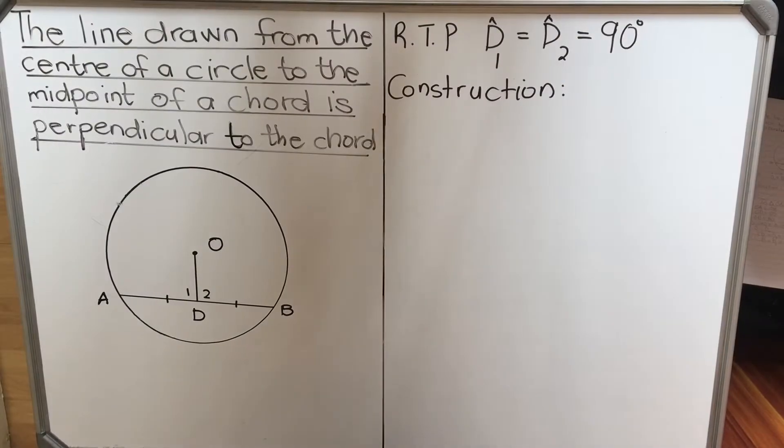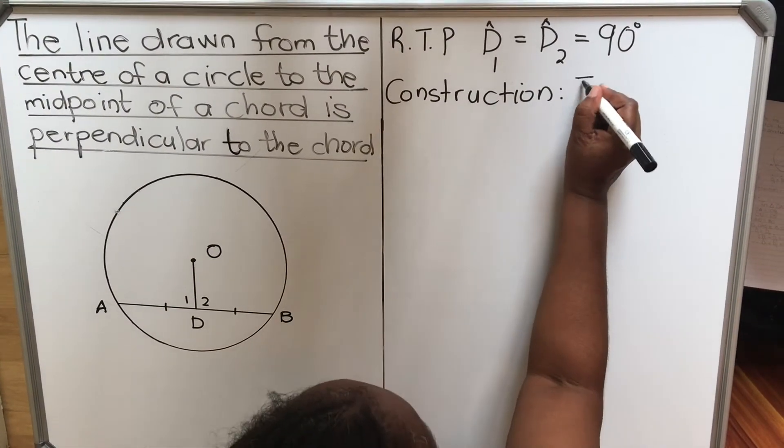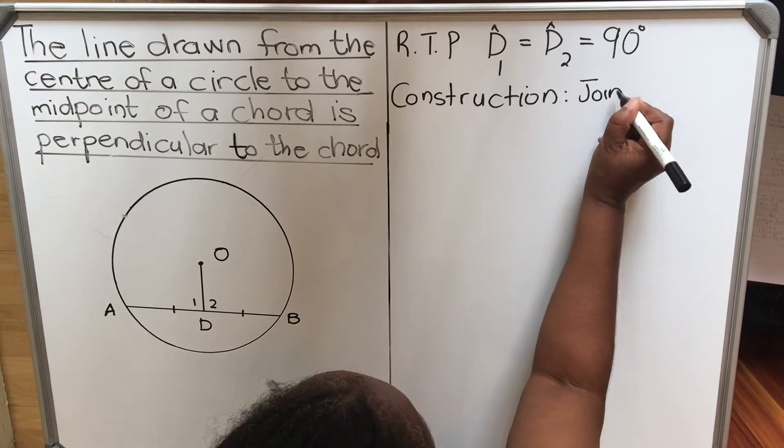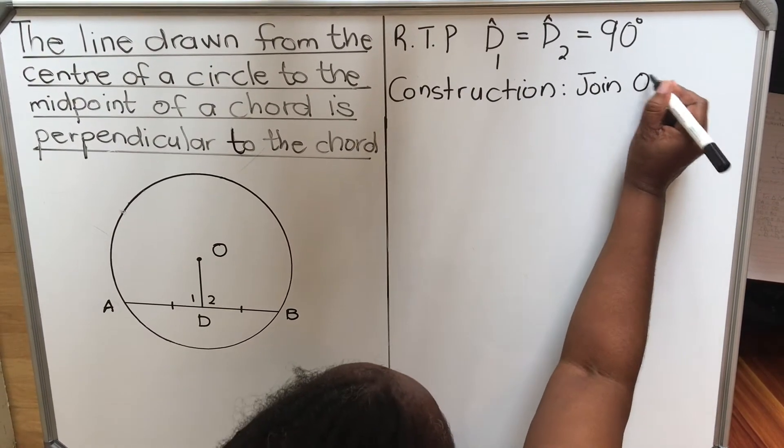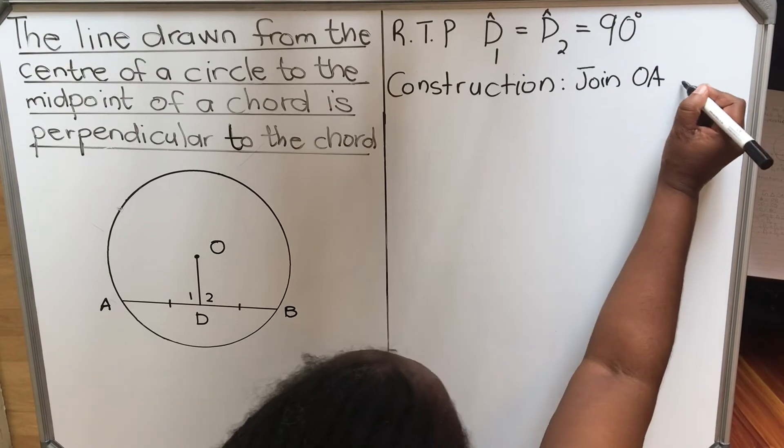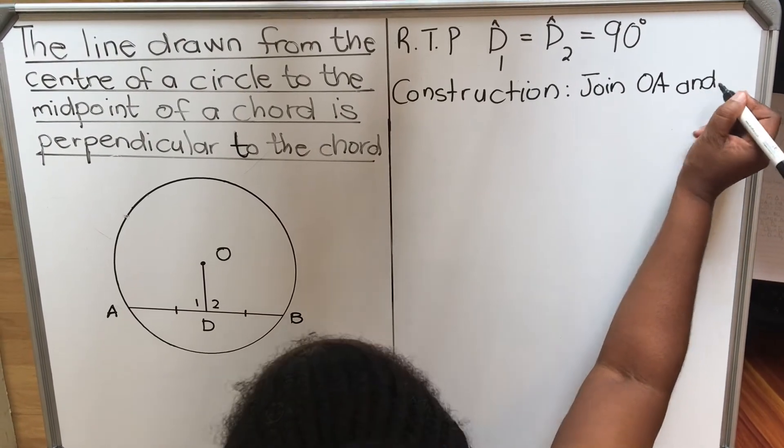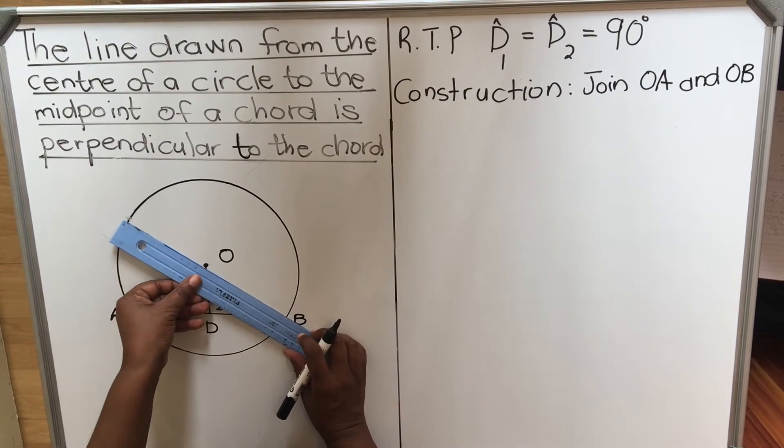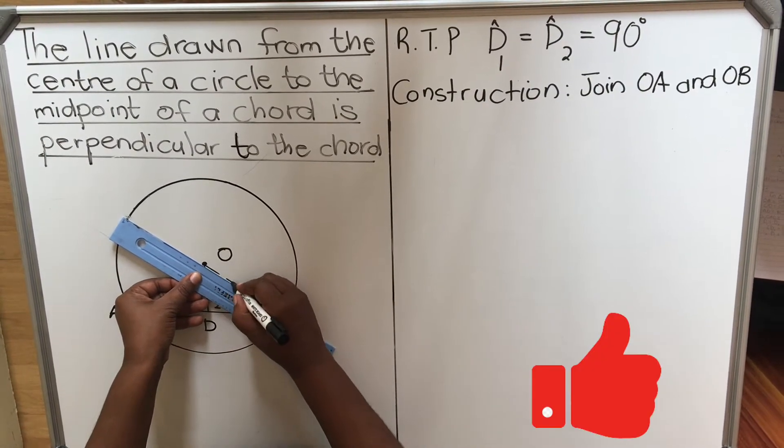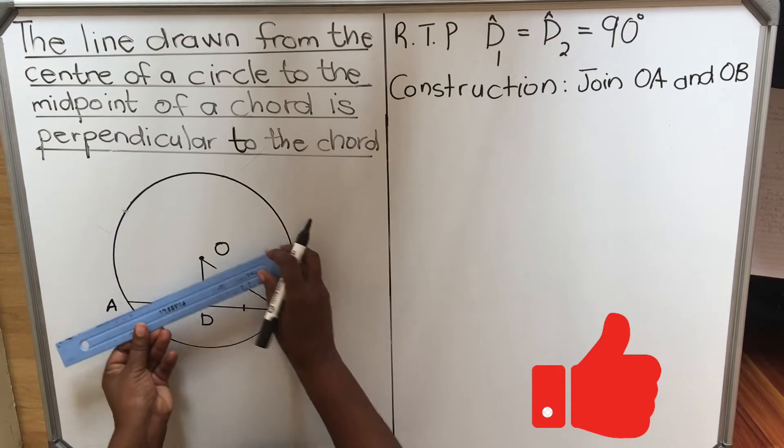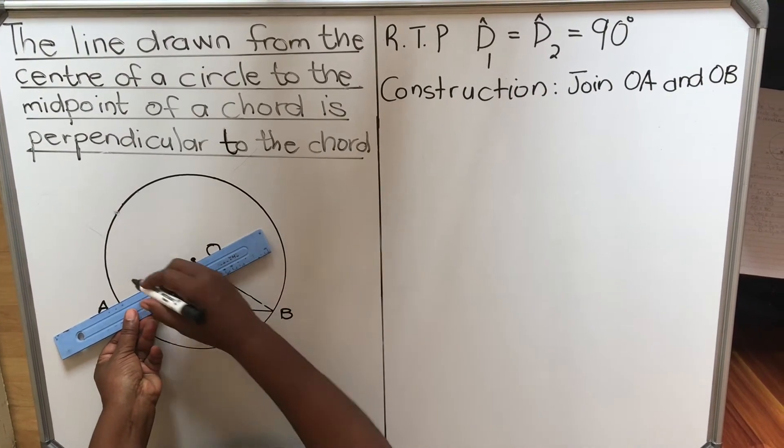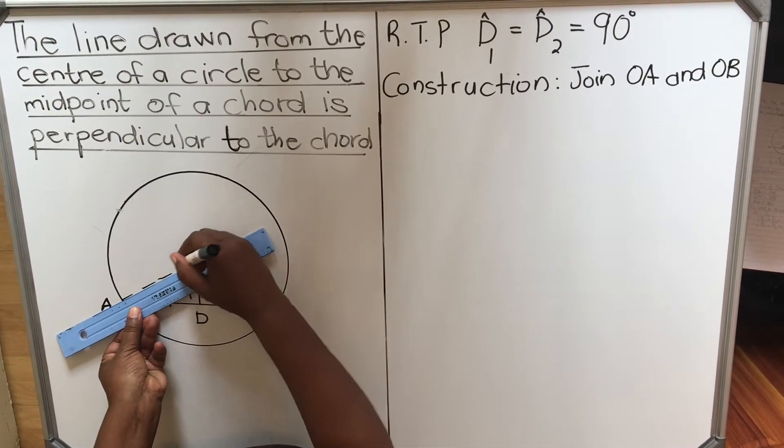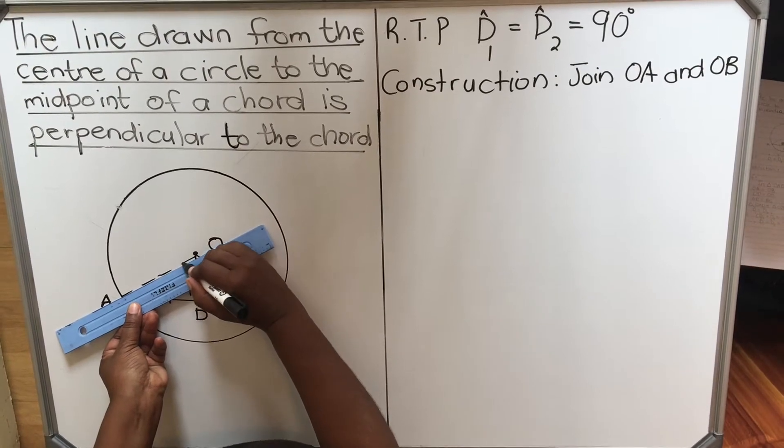Construction: you are going to join. You need to write it in words and do it in a diagram. Join OA and OB. Then you go to your diagram. For the construction you do dotted lines. Join OB and OA.